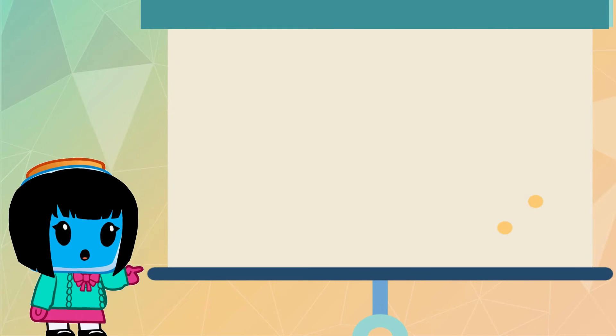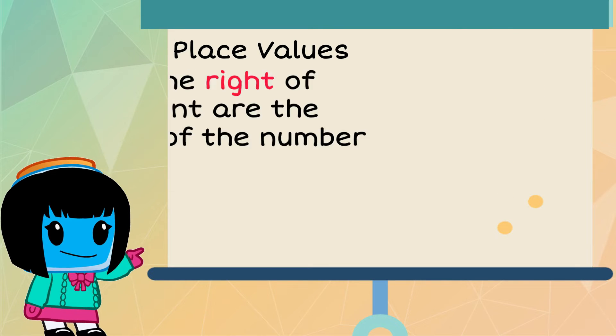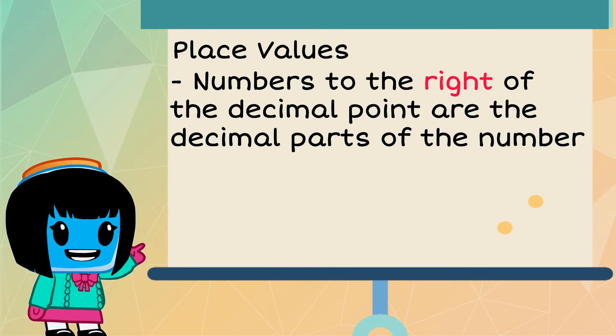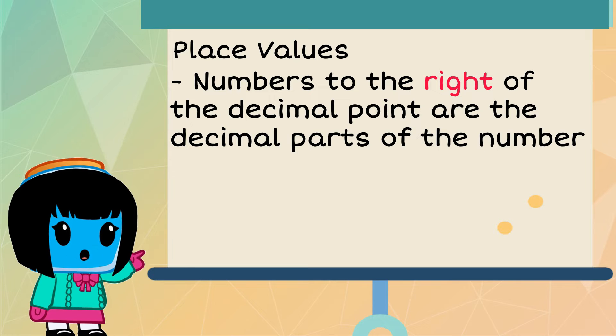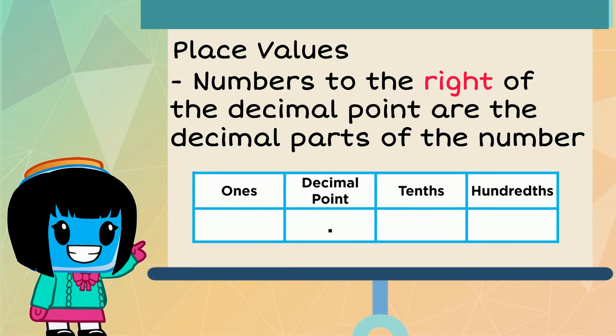First, let's go over place value. Numbers to the right of the decimal point are the decimal parts of a number. Take a look at our place value chart.